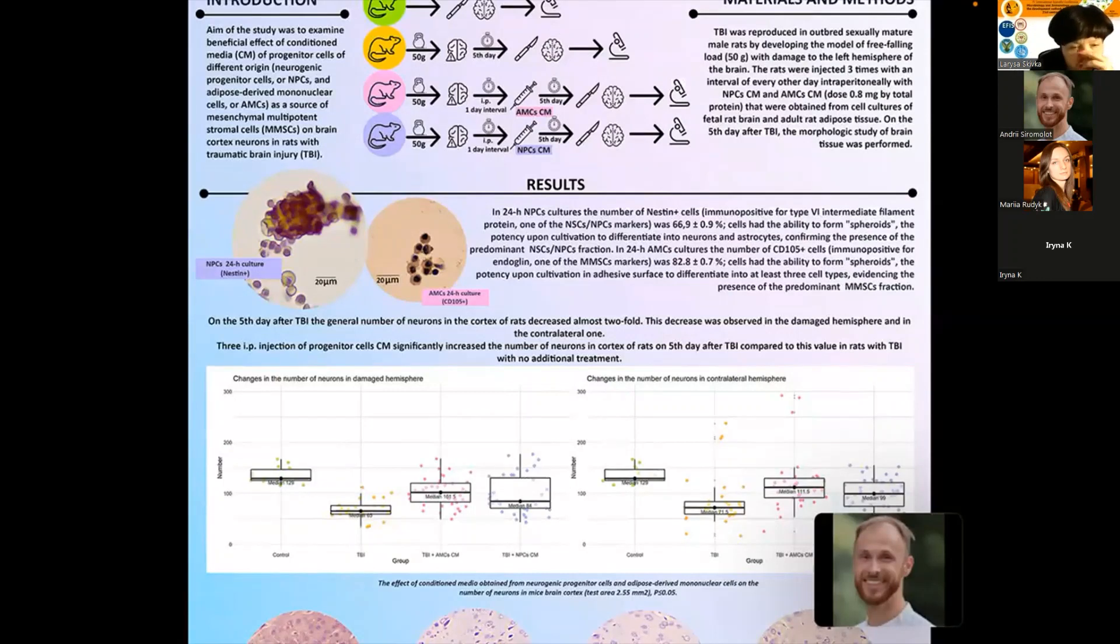Also it should be noted that the cells in these cultures showed the ability to form so-called spheroids and to differentiate into neurons and astrocytes in NPC cultures and into at least three other cell types in AMC cultures. The control group and the group where only brain damage was reproduced but with no injections were also prepared.